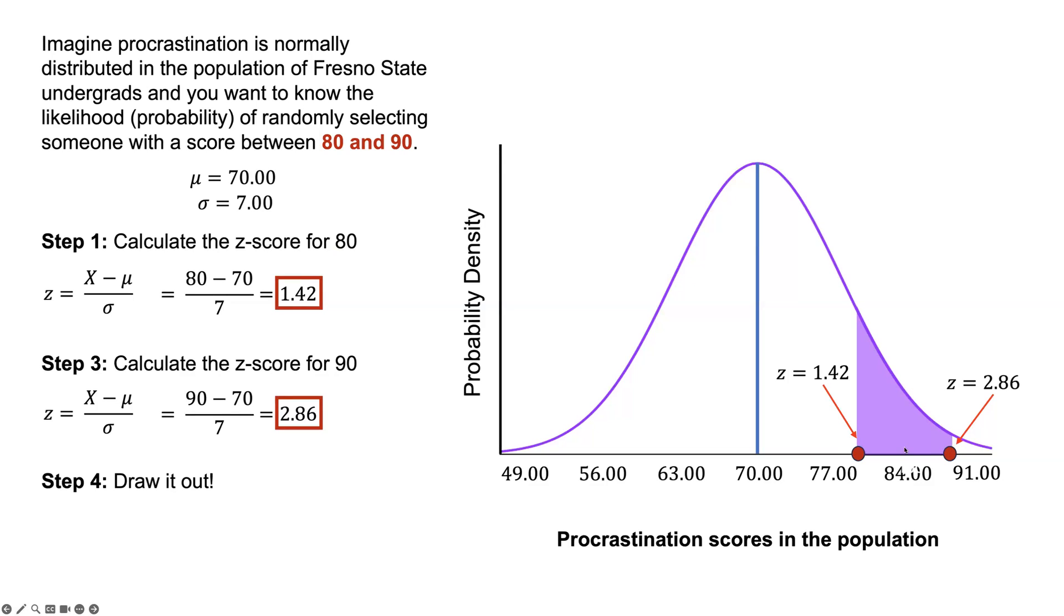The idea is that we're now looking for the area under the curve that falls between these two z-scores. We can't use just one spot on the unit normal table. We need to look at two z-scores and do some calculations. There's two different ways to do this.